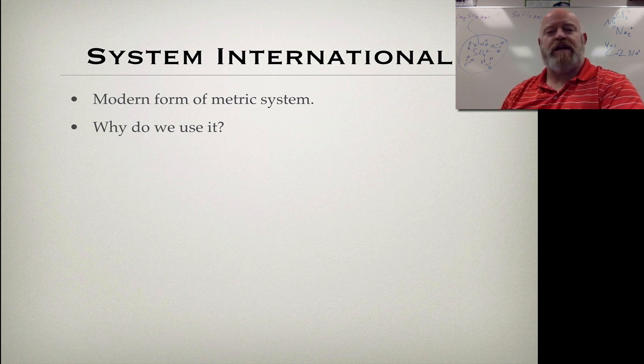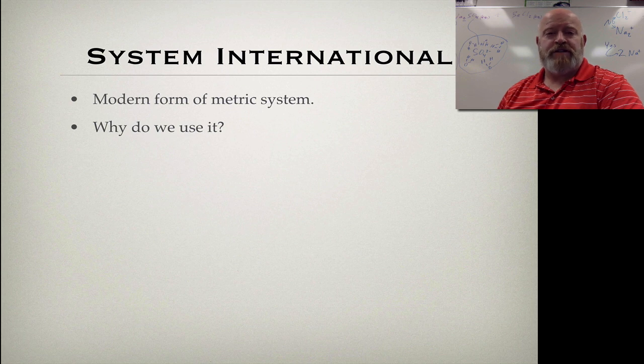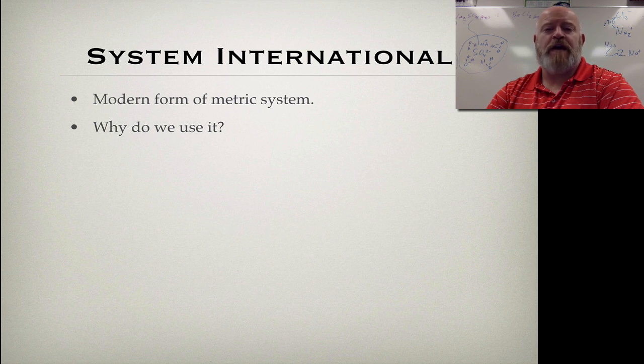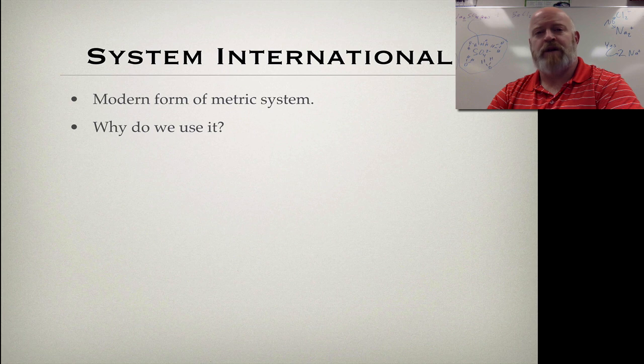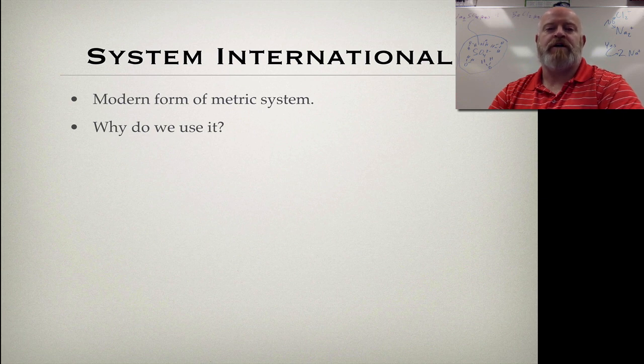We're going to move on to this idea of System International, or the SI system. Most of you guys are probably familiar with calling it the metric system, and the metric system is actually an older version of the SI system. So the SI system is something that's been agreed upon universally throughout the world to be the system that we're going to use for measurements and weights and a way to portray data. It's hard for us in our country because we have our common system using feet and inches and ounces and pounds, and that's what we grew up and learned. It makes it more challenging for a science student in the United States because our base system of measurement does not match the rest of the world.